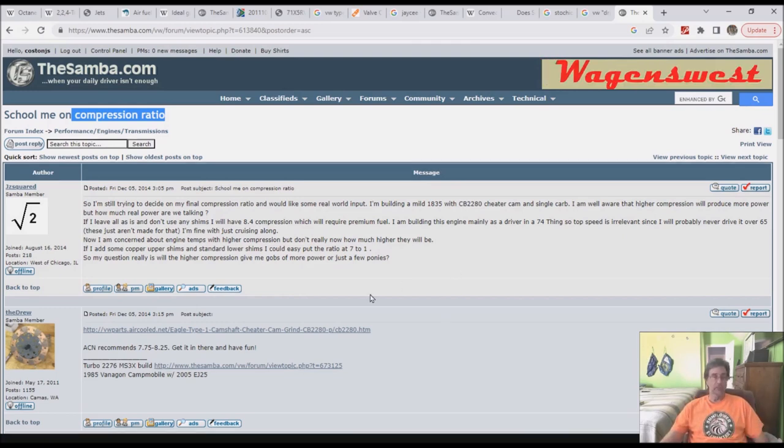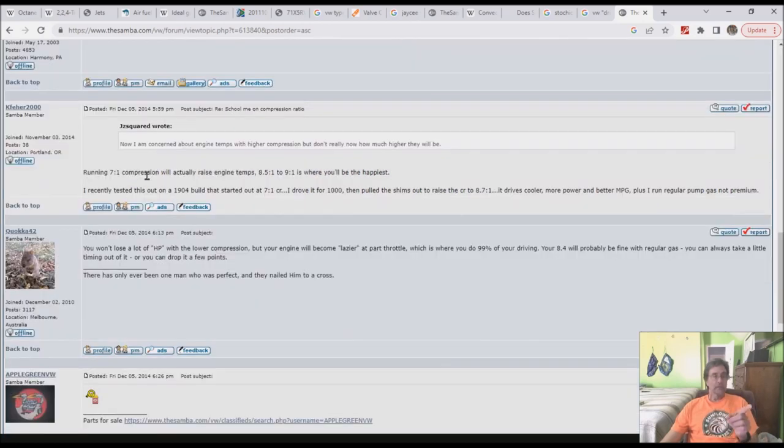They're all telling him run as much compression with that cam as you possibly can. They're not recommending he go into the nine to one range, but they are on board that higher compression is better, it's more efficient. Running seven to one compression will actually raise the engine temperatures - it's less efficient. To make the same power you have to put more fuel and air in, which releases more heat, which means more waste heat, higher exhaust temperatures.